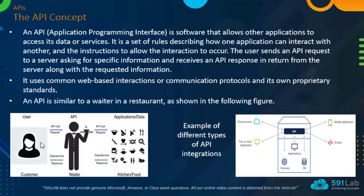An API is similar to a waiter in a restaurant. The waiter takes the customers' requests to the kitchen in order to fulfill those requests. An API interacts between two applications and integrates one application to another — fetching information from one application to provide services, whether on cloud services, mobile services, or database applications.